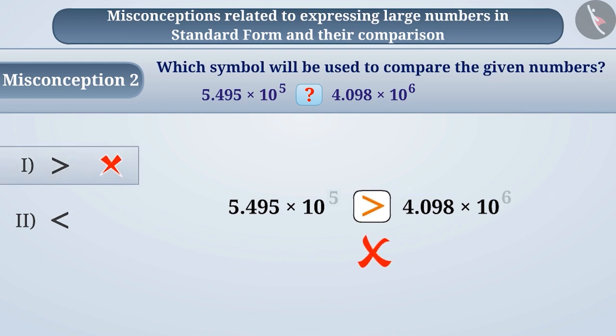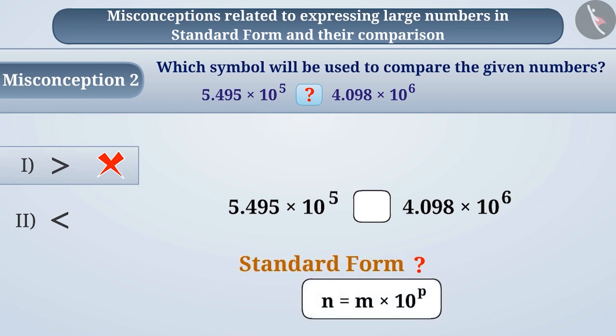In order to compare correctly, we first check whether the two numbers are in their standard form or not. If the numbers are not in the standard form, then we convert them into the standard form. Next, we observe the power of 10 in both numbers and find out which number has a greater power of 10 and which one has a smaller.